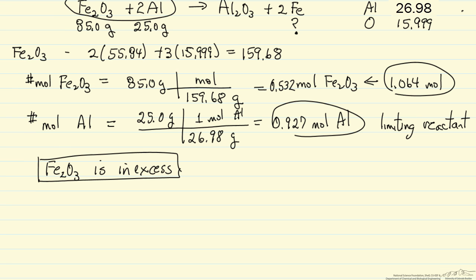The next question is: how much iron is produced? From the reaction, two moles of aluminum reacting makes two moles of iron. If all the aluminum reacts—since it's the limiting reactant, that's possible—then we would end up with 0.927 moles of metallic iron.